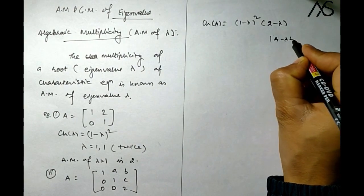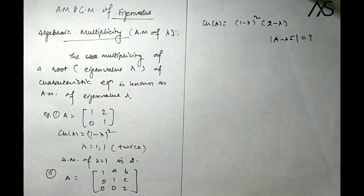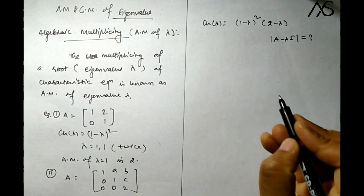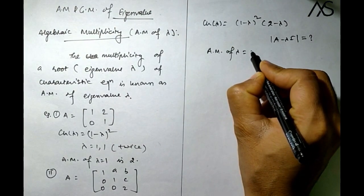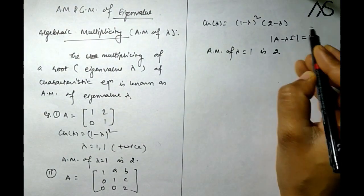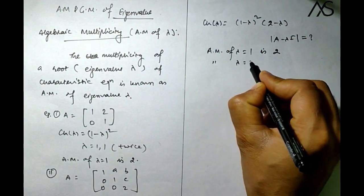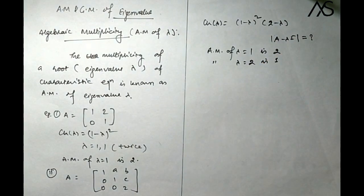We compute the determinant of A minus lambda I. For this triangular matrix it becomes (1 minus lambda) squared times (2 minus lambda). So AM of lambda equals 1 is 2, and AM of lambda equals 2 is 1.